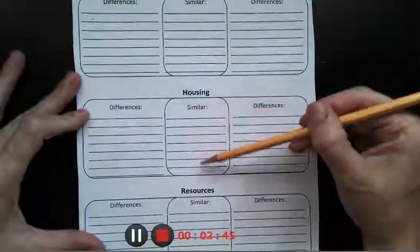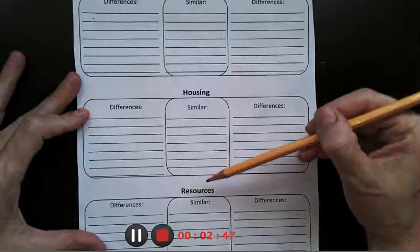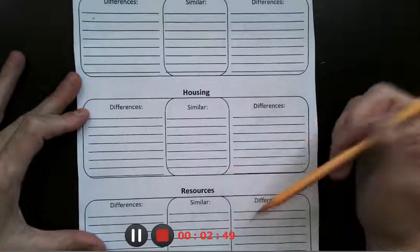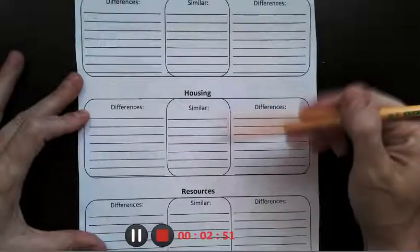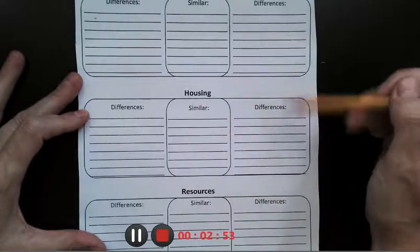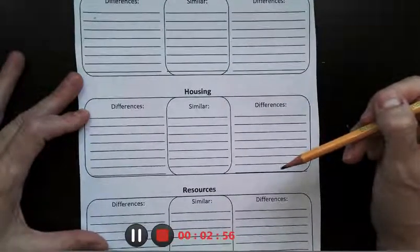How did they have similar housing? How was their housing similar? Maybe they didn't look the same, but maybe they used the same materials. And then how are they different? Maybe they were different in outward appearance.